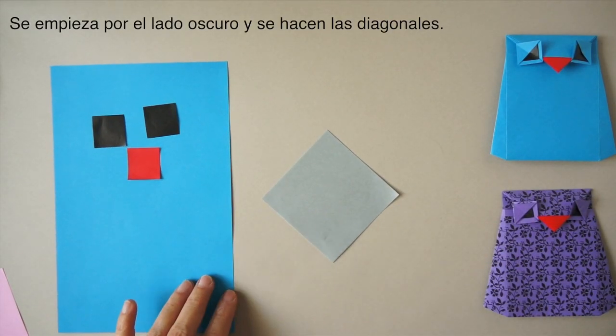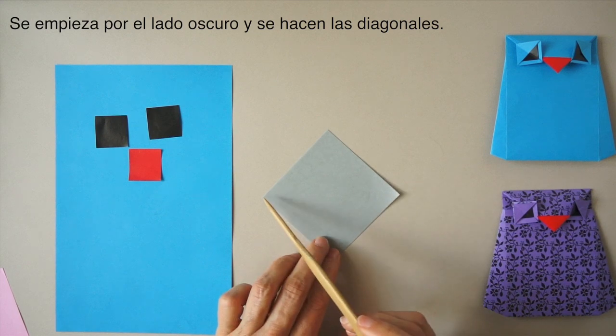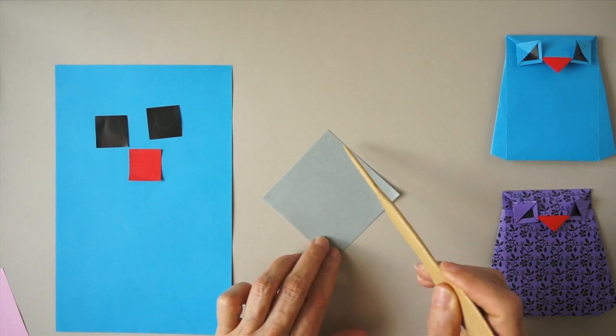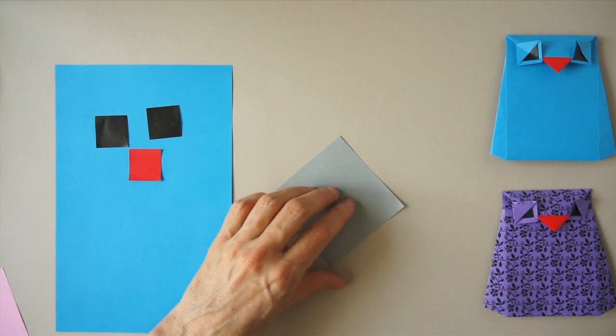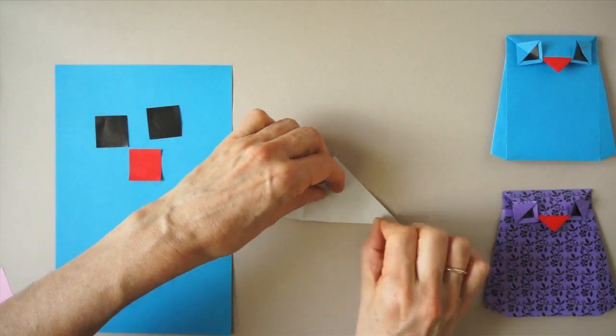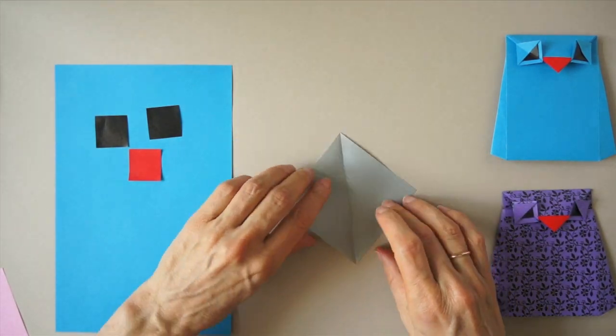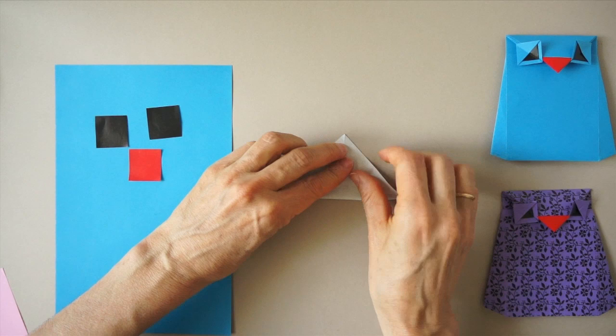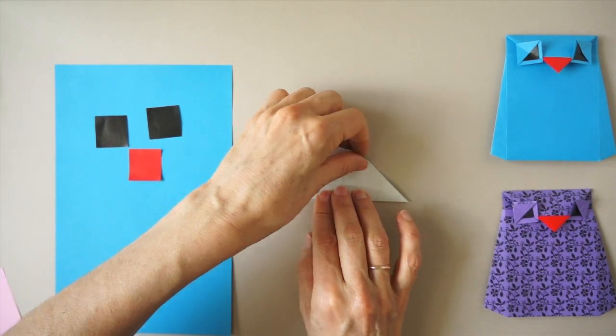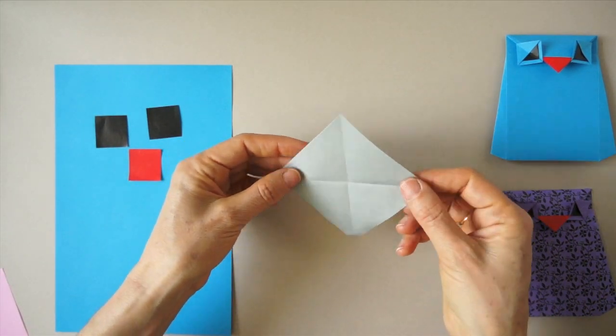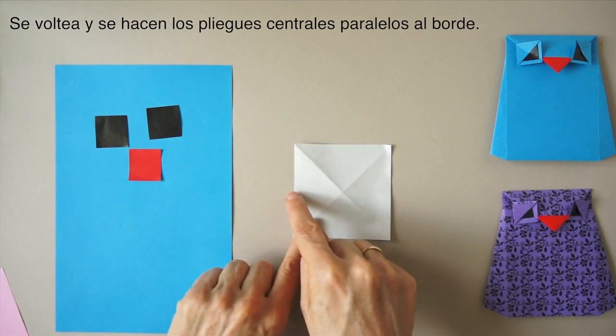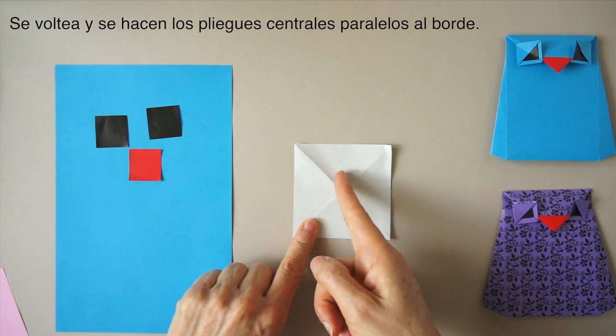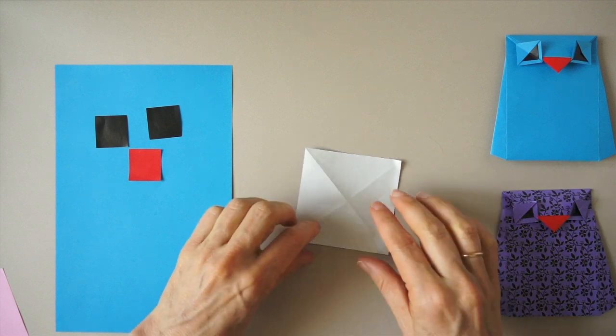We begin on the gray side, in this case, and make the diagonal folds.